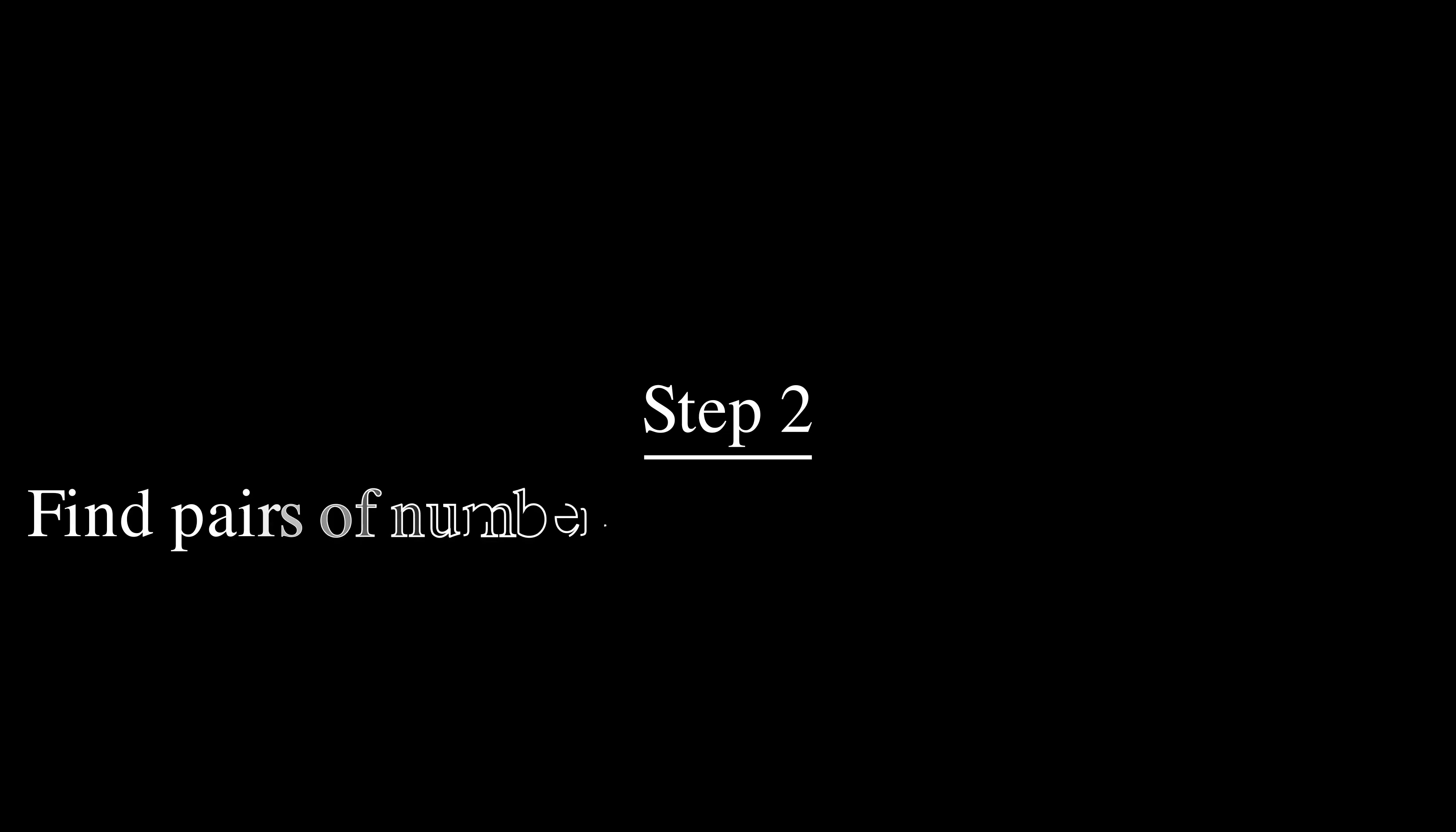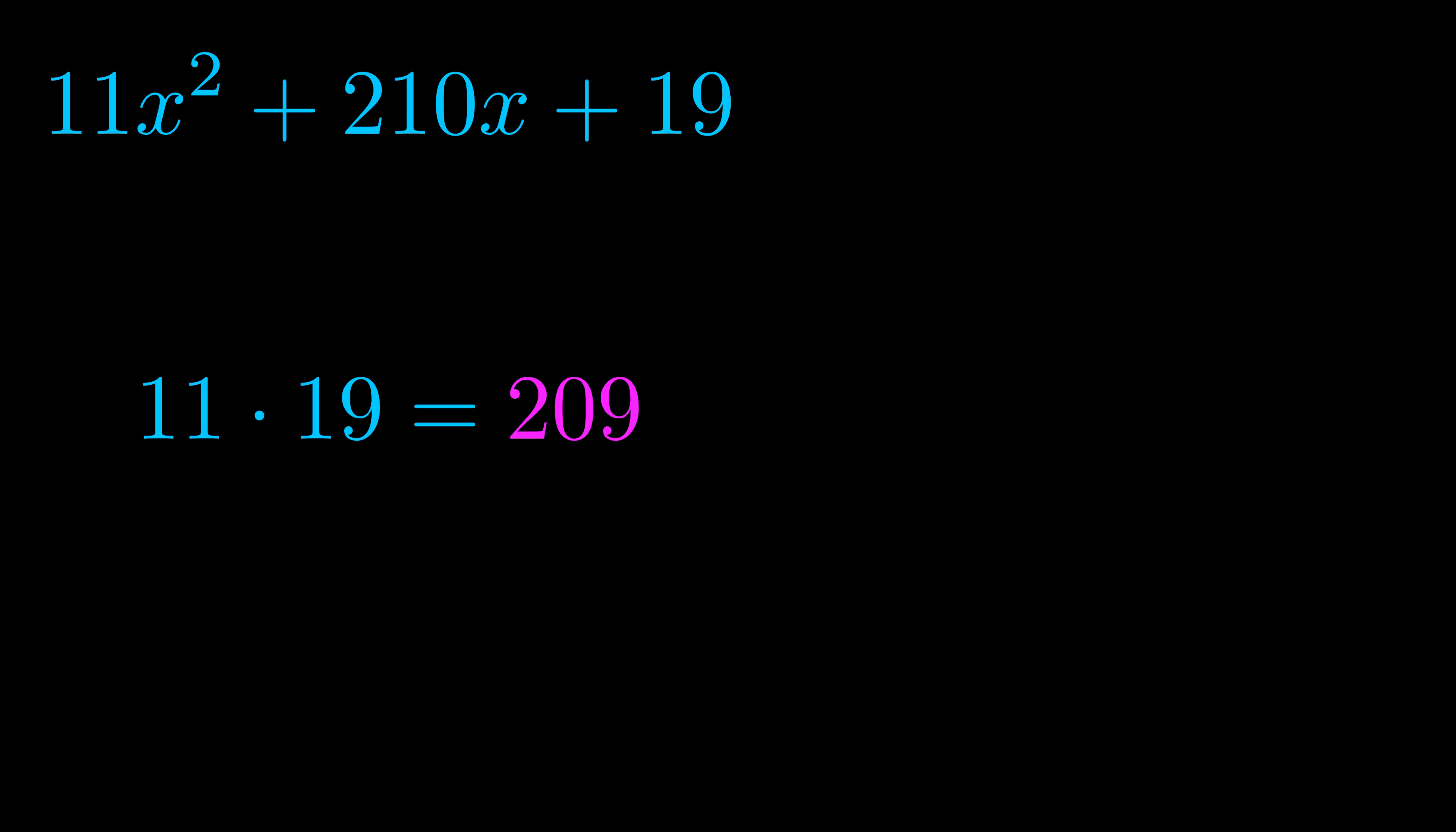Step two is to try to find all of the pairs which multiply to this number. Now turns out you don't really need to find all of them, but go ahead and write down as many numbers as you can that multiply to the magenta value for now.